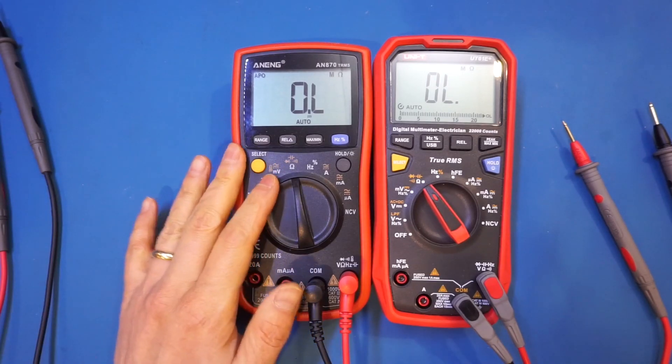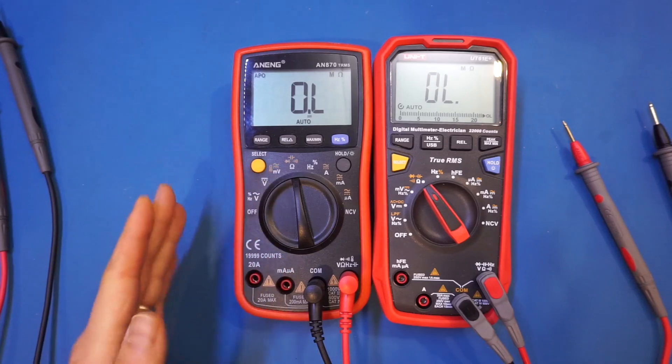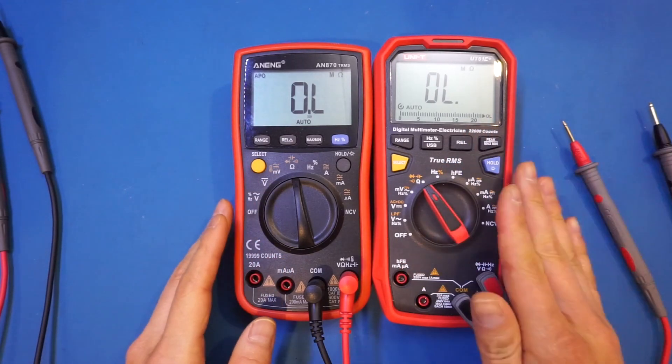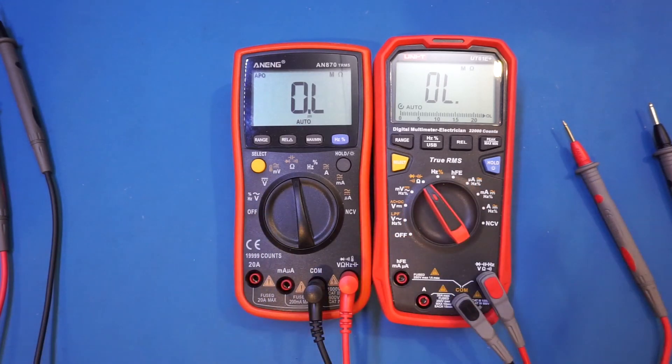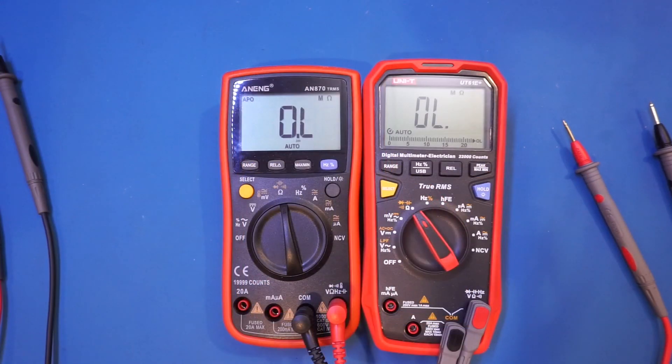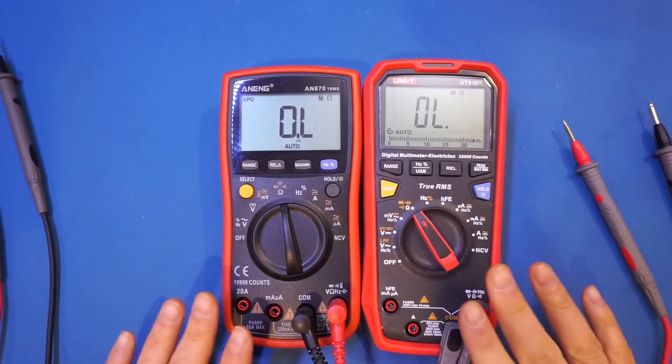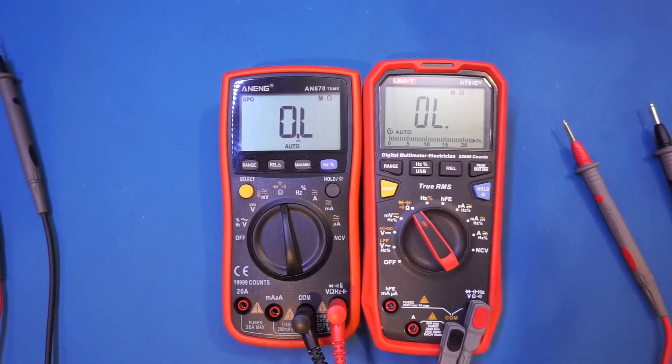Of course, the AN870 offers temperature measurement, whereas the UT61E Plus does not, but it offers HFE measurement, so it's neither here nor there. That's pretty much what I wanted to show you from a side-to-side comparison perspective of these two meters.